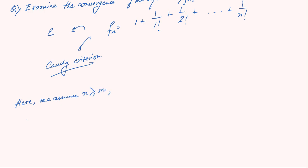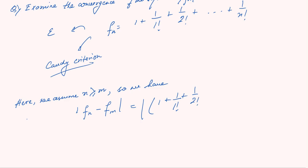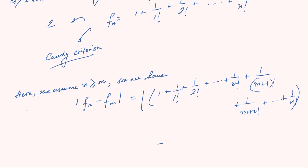We have |f_n minus f_m| equal to the modulus of 1 plus 1 by 1 factorial plus 1 by 2 factorial plus dot dot dot plus 1 by m factorial plus 1 by (m+1) factorial plus dot dot dot plus 1 by n factorial, minus the quantity 1 plus 1 by 1 factorial plus dot dot dot plus 1 by m factorial.